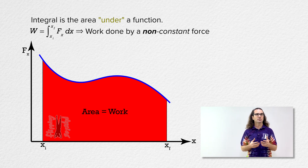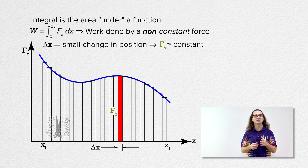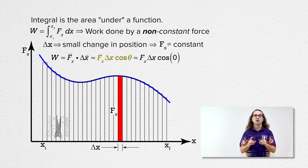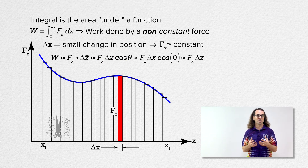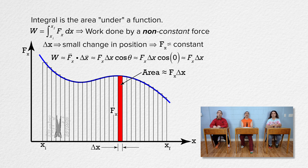I'll clarify why the quotes are around the word 'under' in this phrase later in this lesson. In order to determine the area under the curve, let's consider small changes in position or delta x. During those small changes in position, the force can be considered to be approximately constant. And because the force and displacement are in the same direction — both in the positive x direction — the angle in the work equation is zero. The work done by the force for this small change in position is the dot product of force and displacement, or force times displacement times cosine theta. Because the force and the displacement are both in the positive x direction, the angle is zero degrees and the cosine of zero equals one.